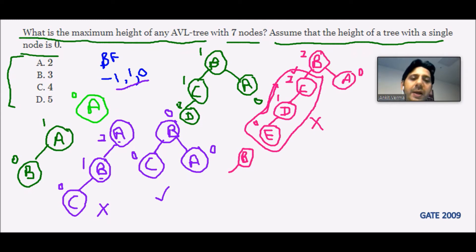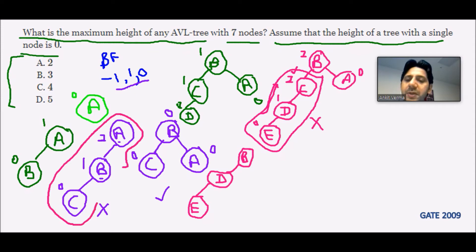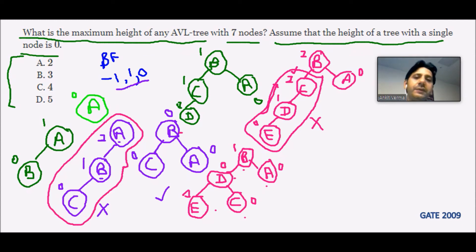Reconstructing the tree: D becomes the parent (the middle element becomes the parent, as happened earlier with B). After rotation, checking the balancing factors: all leaves have zero, D has one minus one which is zero, B has two levels minus one which is one. The tree is again balanced. At this point, we have successfully inserted five nodes.